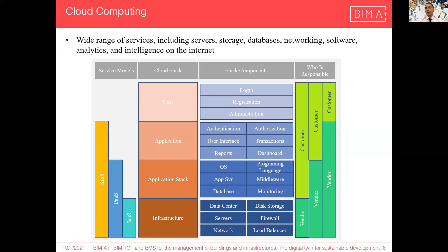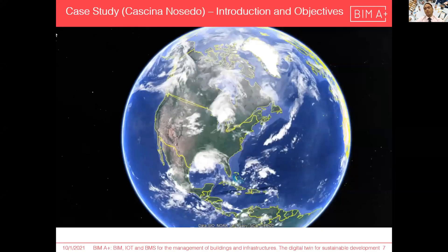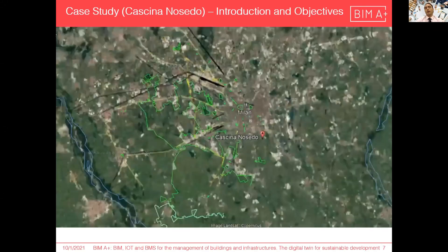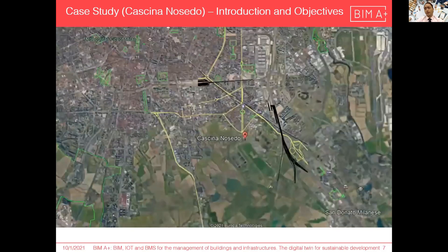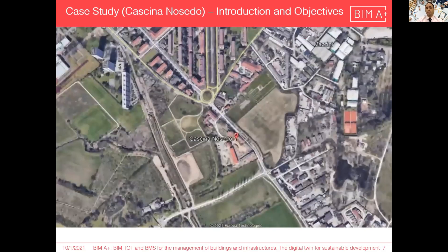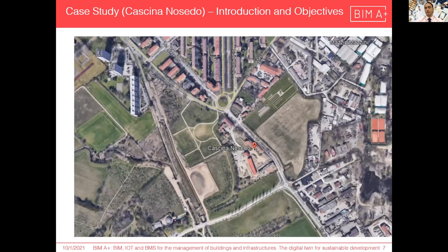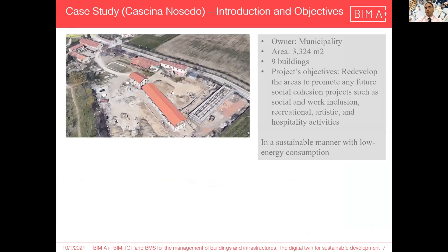Now let's see how we can create a digital twin model using these concepts. The case study is Cascina Nozedo, a project located in the southeast of Milan. Its history dates back to the 14th century, but recently the municipality of Milan decided to redevelop this area for artistic and recreational activities, and it should be done in a sustainable manner with low energy consumption.